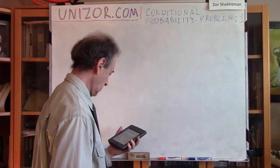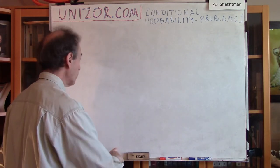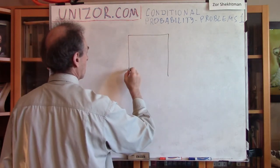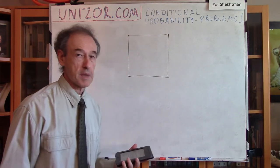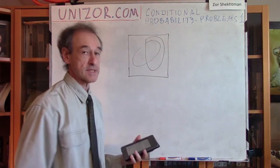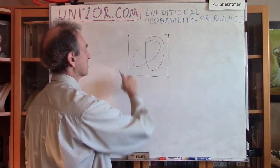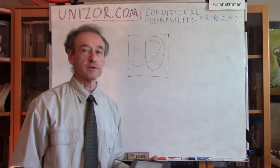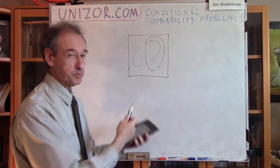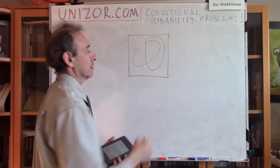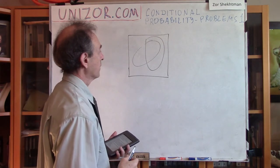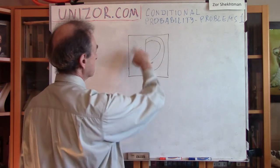Problem number one. We have two events, and I will represent them graphically. This is my sample space and there are two events. Events are subsets — for instance, this represents all the different results of my experiment. This is certain results which form one particular event, and this is another set of elements which is another event.